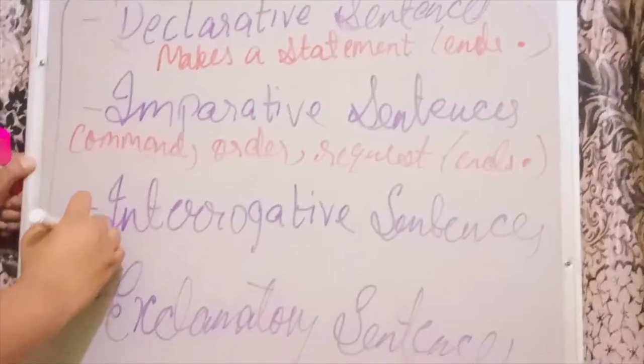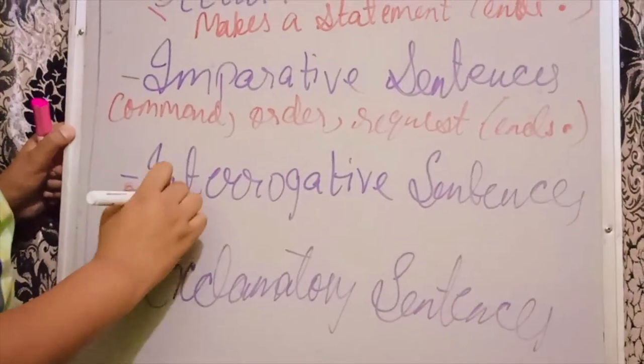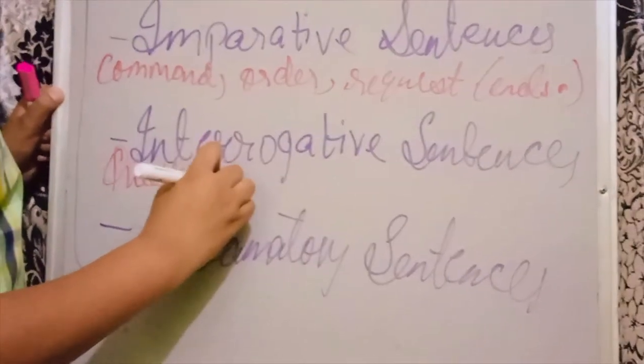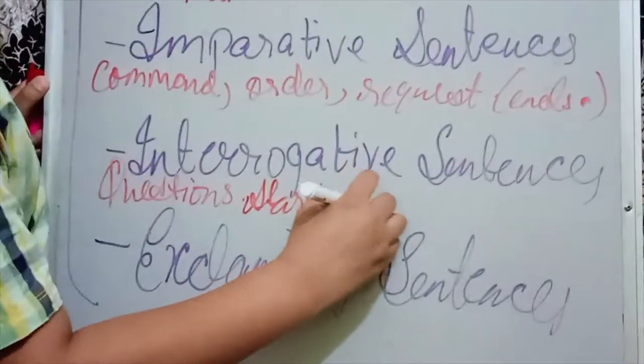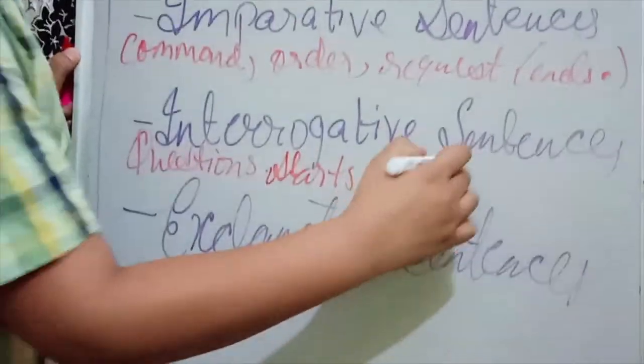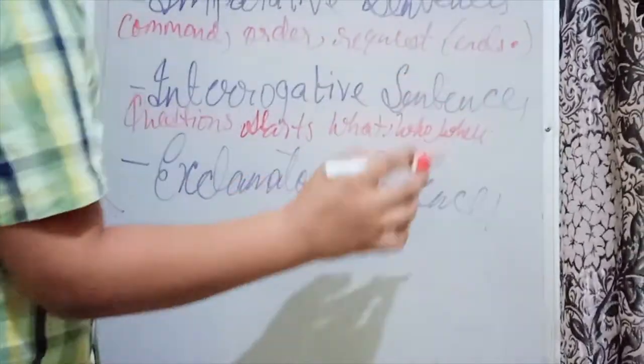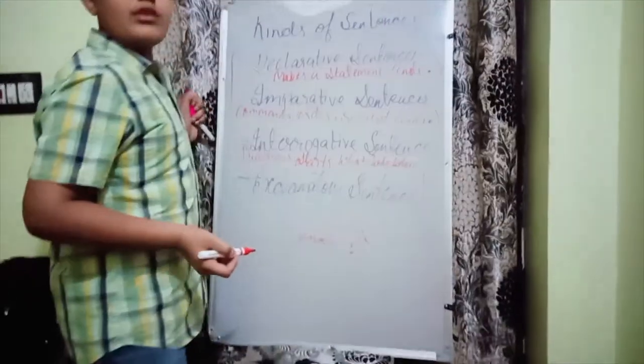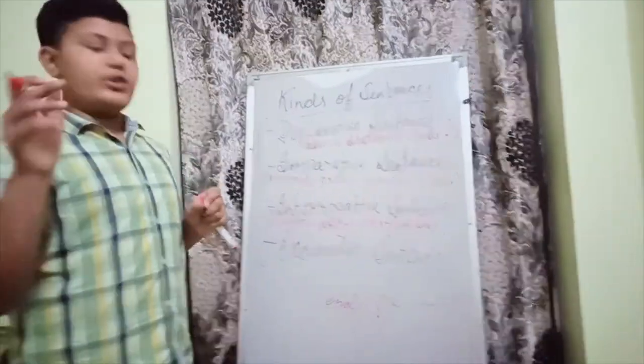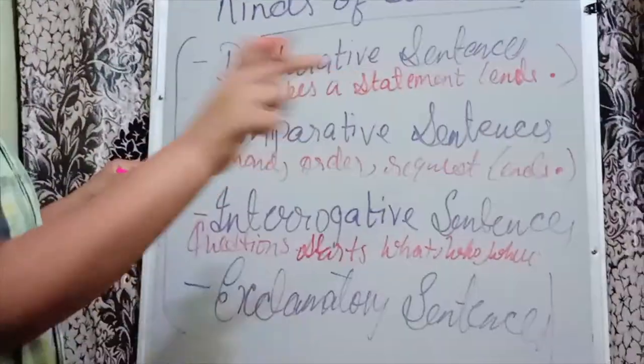An interrogative sentence makes a question. It starts with what, who, or where and ends with a question mark. So that is the sign of a question mark.